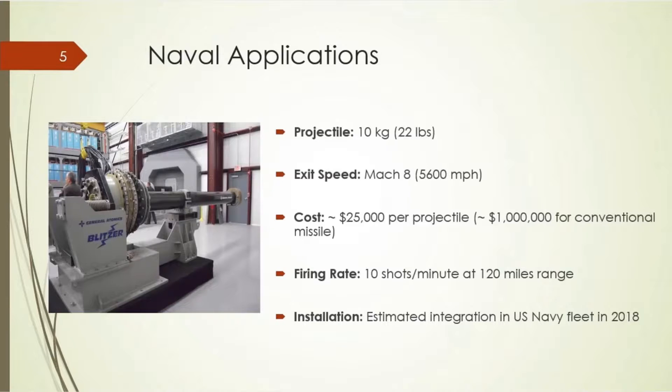This is a picture of the General Atomics Blitzer Railgun. It's able to deliver a 10-pound projectile, 120 nautical miles, at 10 shots per minute, at approximately Mach 7 or Mach 8. As I stated previously, it's 1/114th the cost of industrial missiles used for today's destroyers.